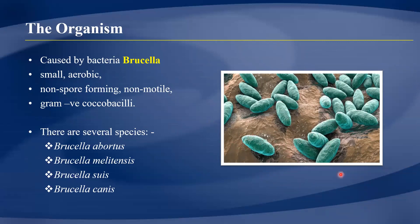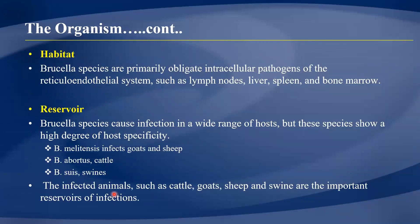Brucella occurs in several species. A few important ones include Brucella abortus, Brucella melitensis, Brucella suis, and Brucella canis, though others exist. One very important characteristic is that brucella is primarily an obligate intracellular pathogen — it likes living inside macrophages and the reticuloendothelial system, in places like lymph nodes, liver, spleen, and bone marrow.